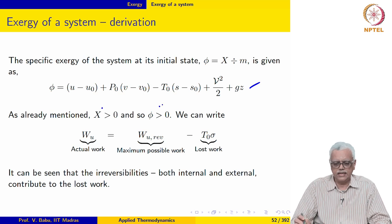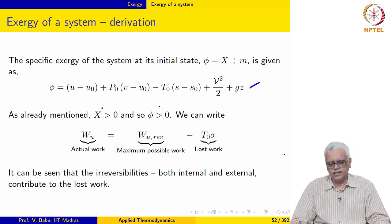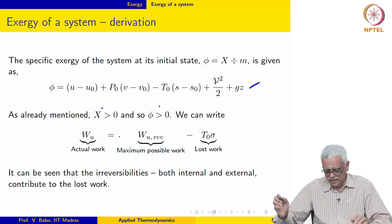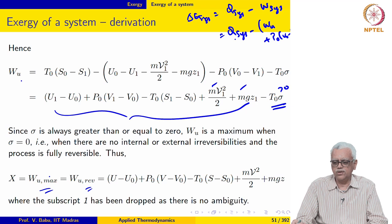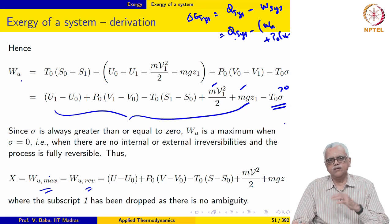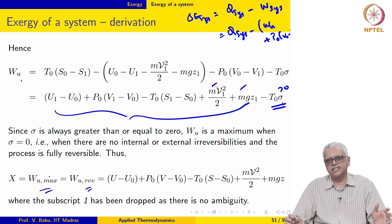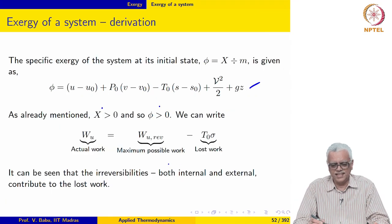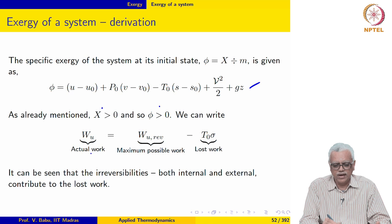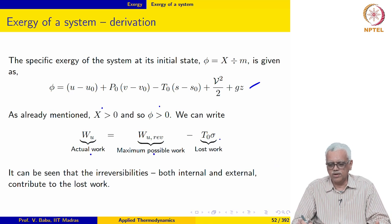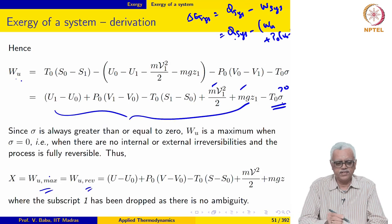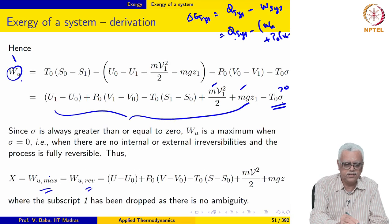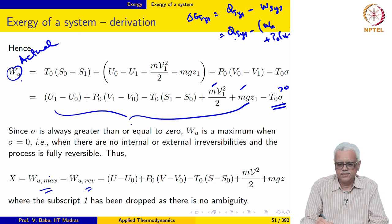Exergy is always greater than 0 and specific exergy is always greater than 0. Notice that this entire expression is the amount of work developed by the system when it executes a process with internal and external irreversibility. This is WU actual — this is maximum possible work minus lost work. Basically, the actual work equals the maximum work minus lost work.